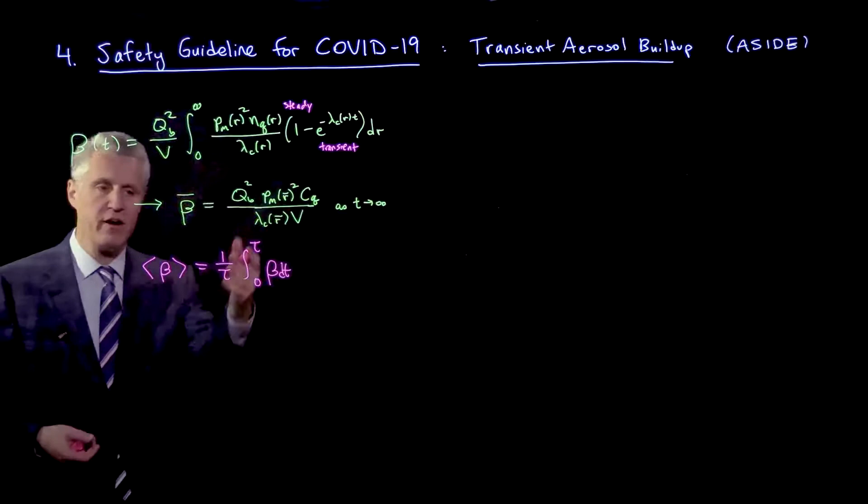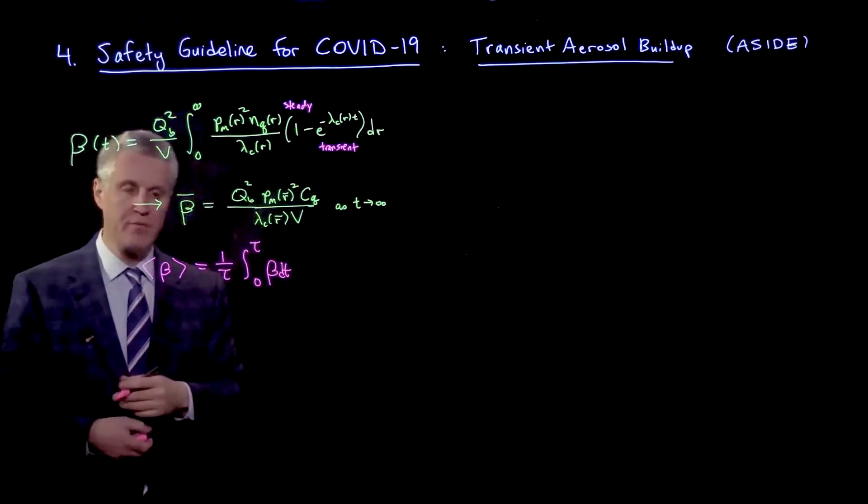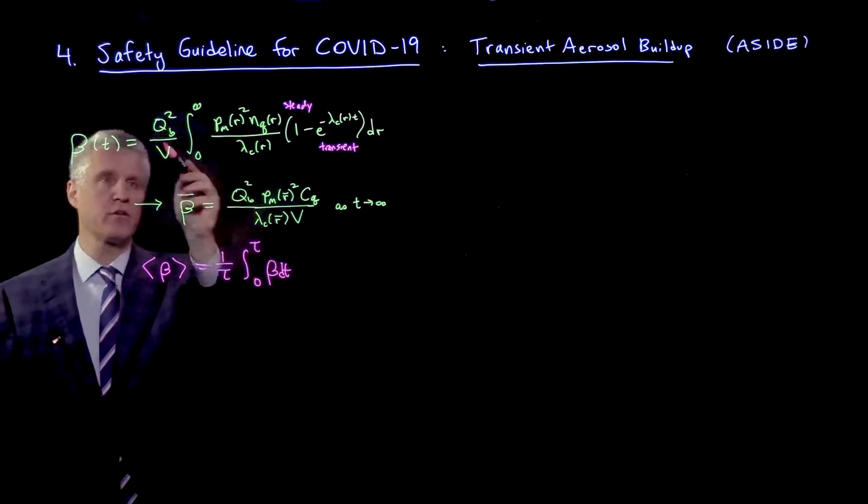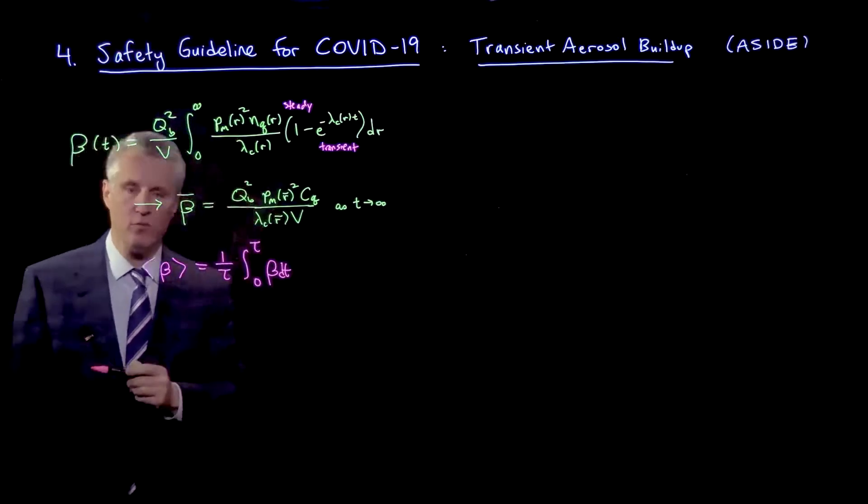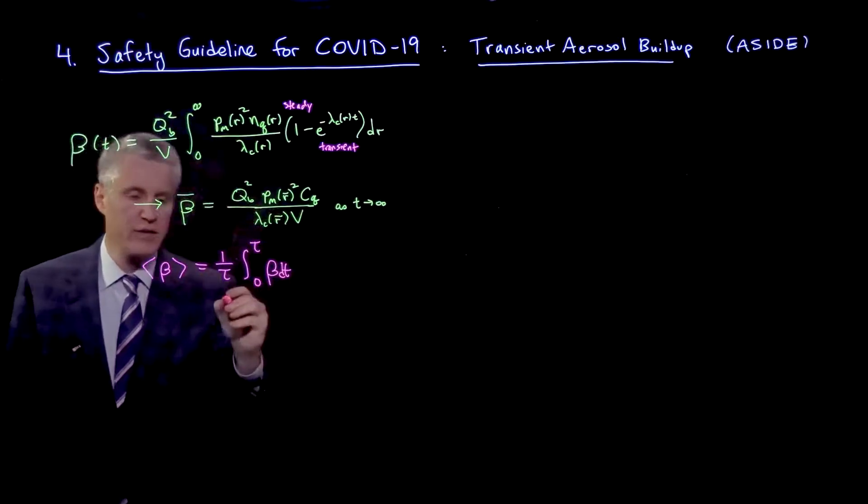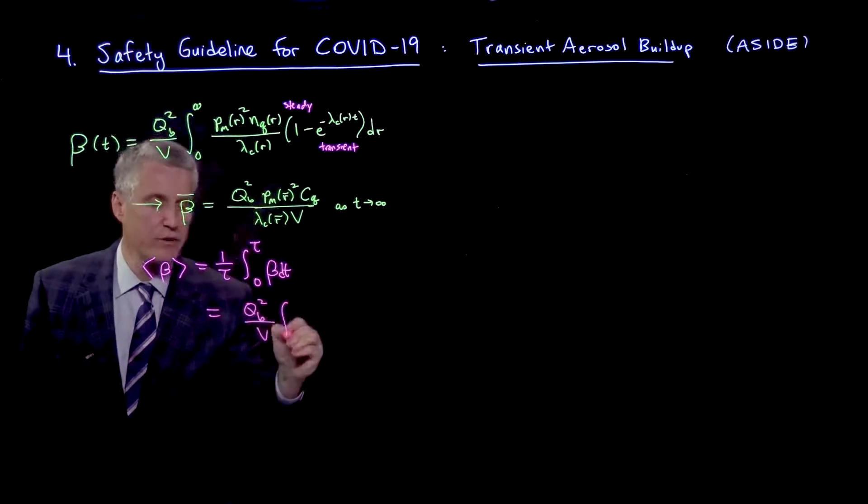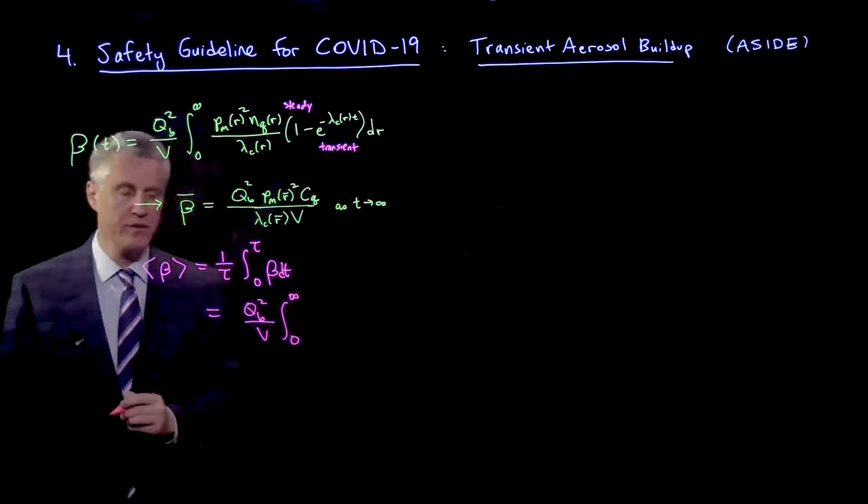So we integrate beta dt from 0 to tau, and then divide by tau. So what would that be? Well, we can take this time integral, and bring it inside the radius integral, and write this as qb squared over v integral 0 to infinity.